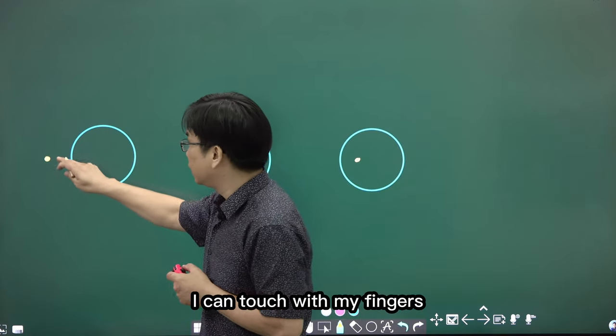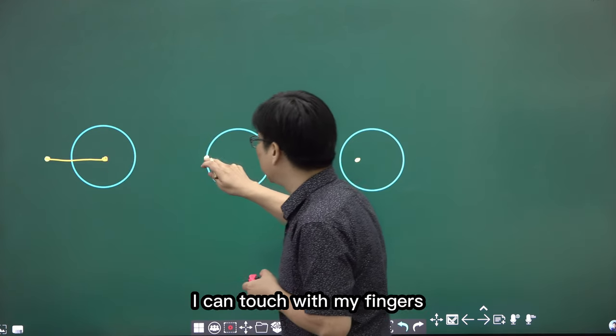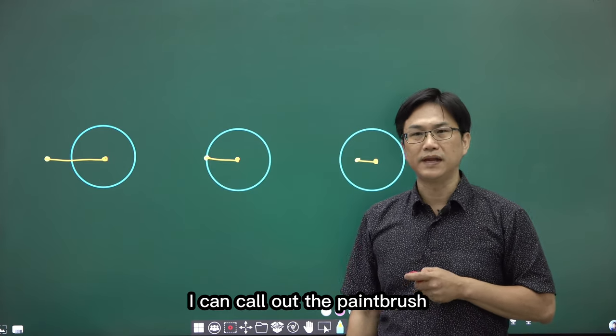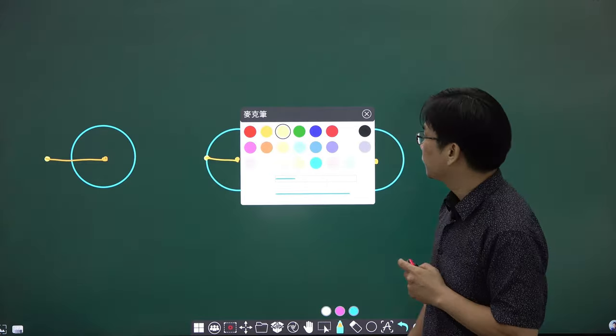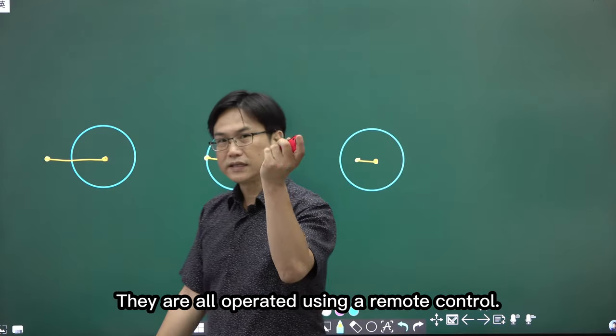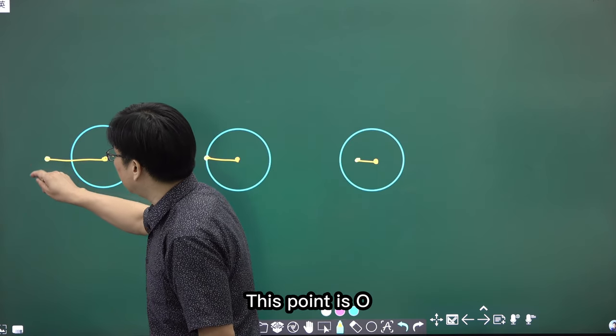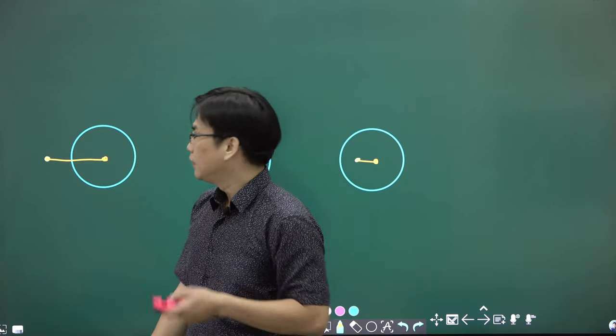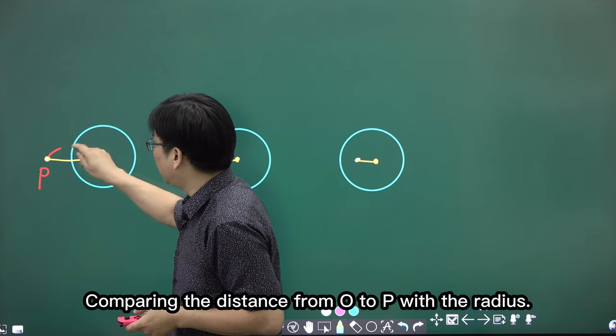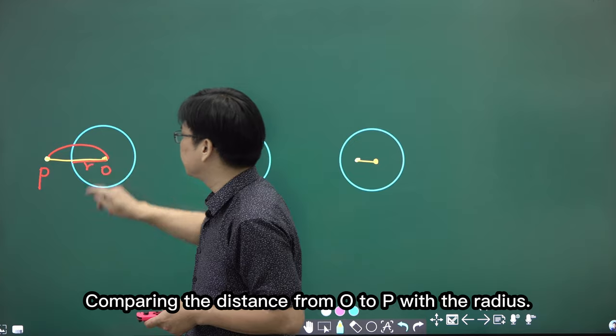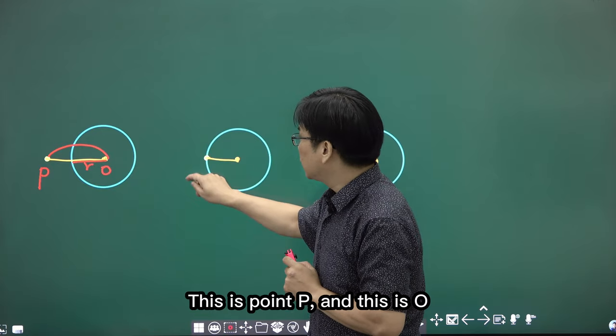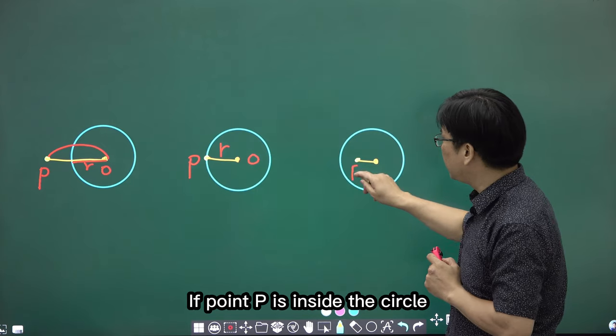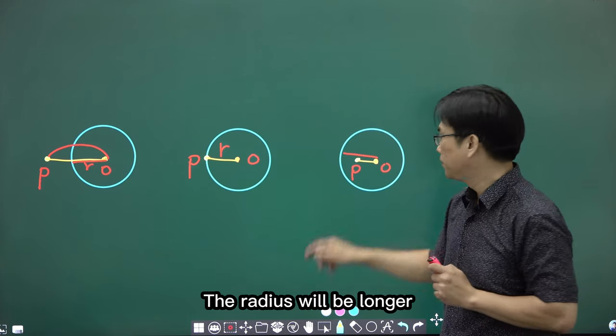I can touch with my fingers and change colors. I can call out the paintbrush and change the color. They are all operated using a remote control. I made a mistake in my writing, I press the undo button. This is P. Comparing the distance from O to P with the radius, apparently the OP is longer. This is point P, obviously the radius is the same as the OP distance. If point P is inside the circle, it is compared to the radius, the radius will be longer.